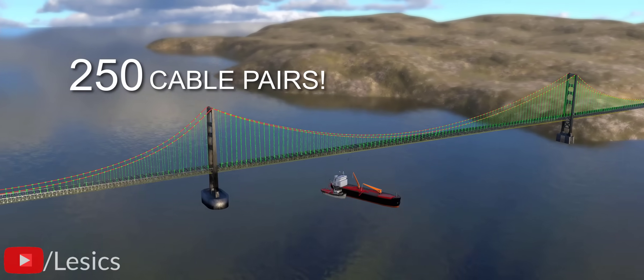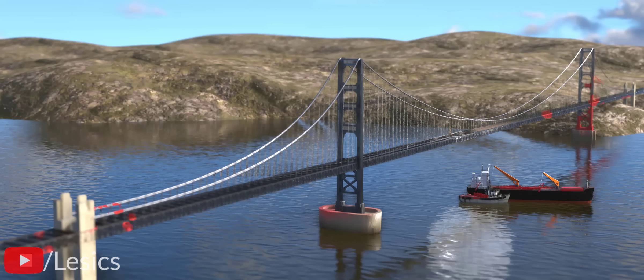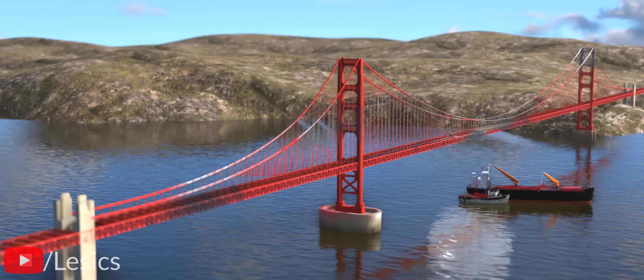250 pairs of vertical cables were used, and they hung the whole bridge deck to the main cable. After the construction of the steel structures, the workers painted the bridge a special international orange color.